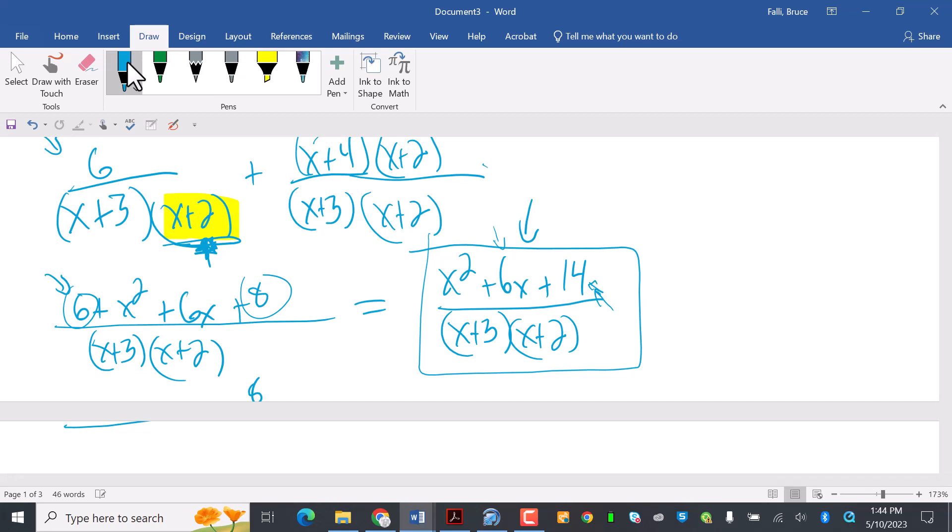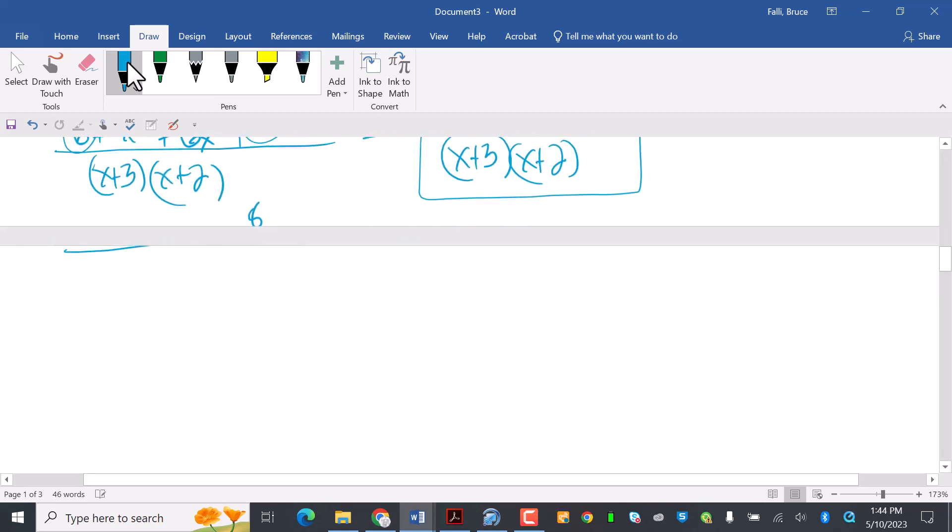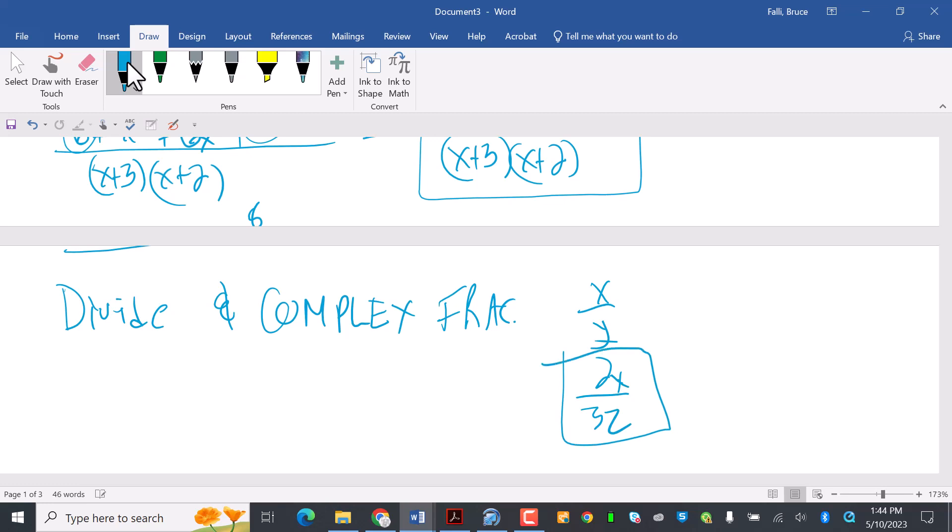I can't read 10 very well, but mine's on there. So let me do 2. So when we divide and complex fractions. Complex fractions would be like x over y over 2x over 3z.